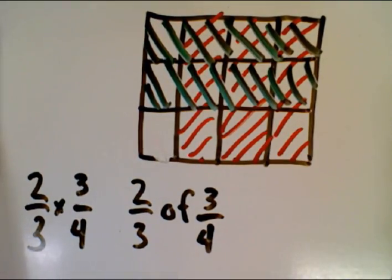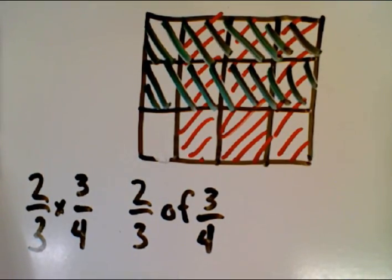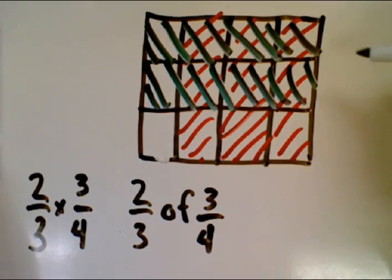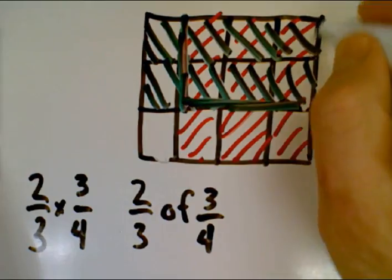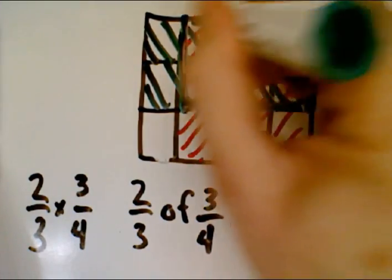The question to be answered still is, what is two-thirds of three-quarters? That's where we look at the overlap of these two pieces, these two fractions. So this section here is the overlap of the two.